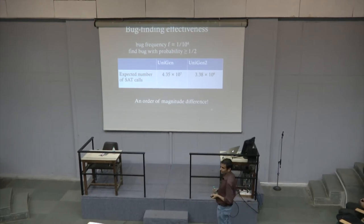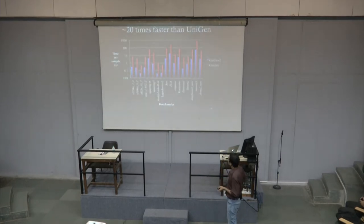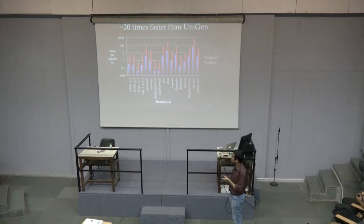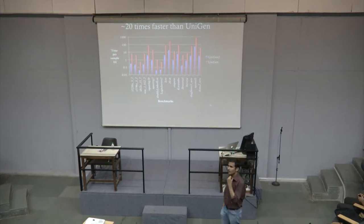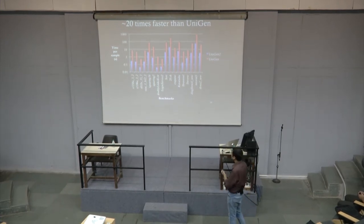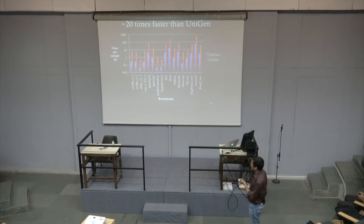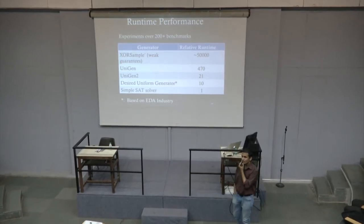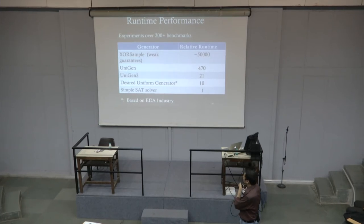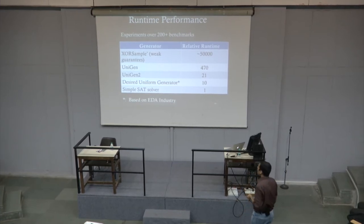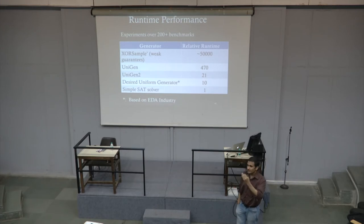There were a few more modifications that I did not discuss, but what we were able to accomplish is to improve UniGen's performance by a 20x factor. UniGen 2 performs 20 times better than UniGen, and the mean relative runtime versus a simple SAT call comes out to about 20x — getting there, but still not exactly where we wanted.